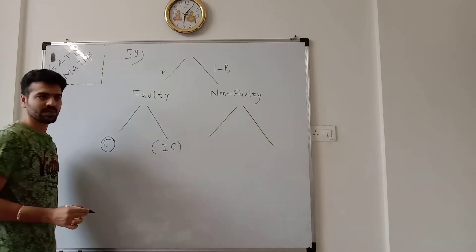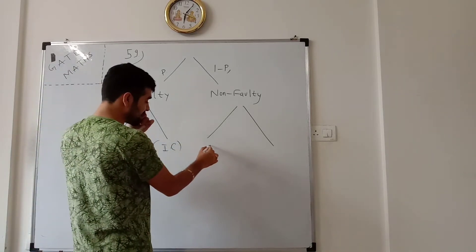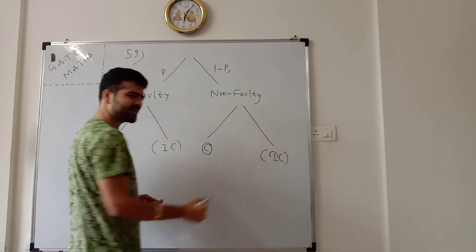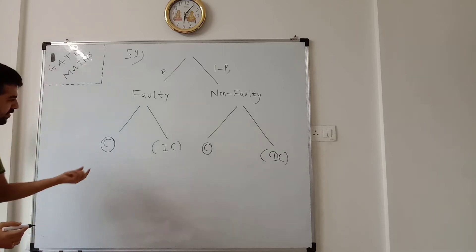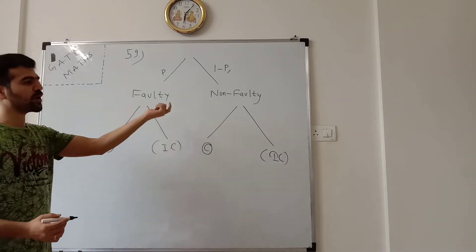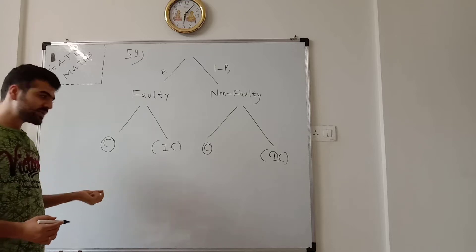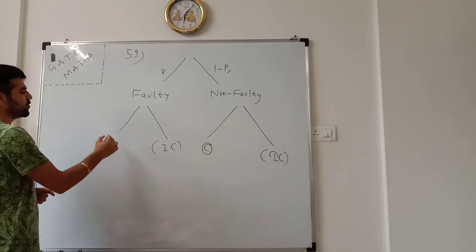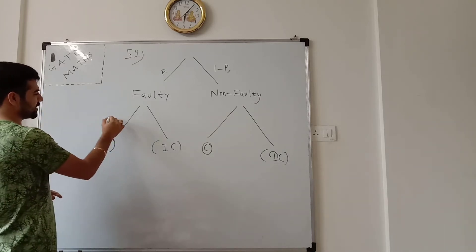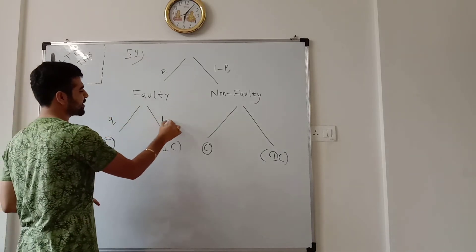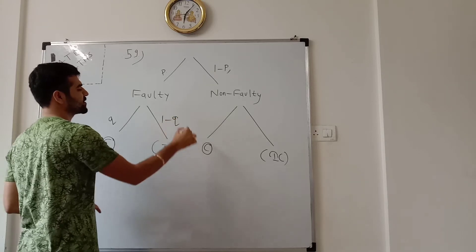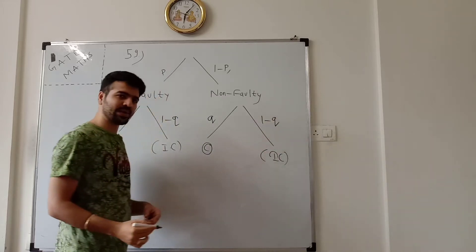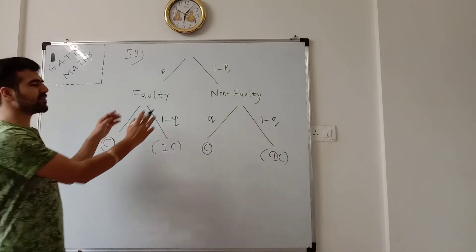In the non-faulty case: the test result can be correct or incorrect. If the product is tested and the result is correct, the chance is q. If the result is incorrect, the chance is 1 minus q.